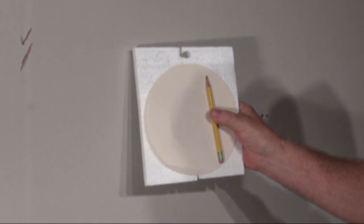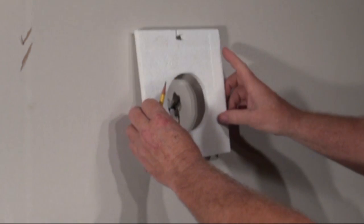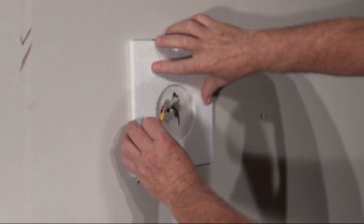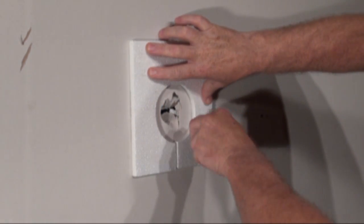Once you've determined which plug to use, take the foam packaging template and place it over the damaged area. Trace a circle using your writing tool.